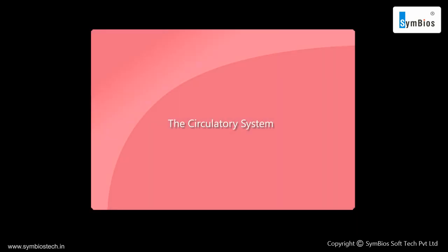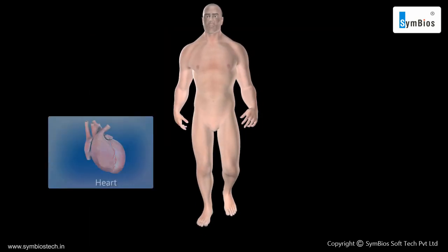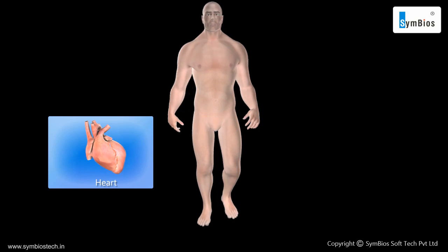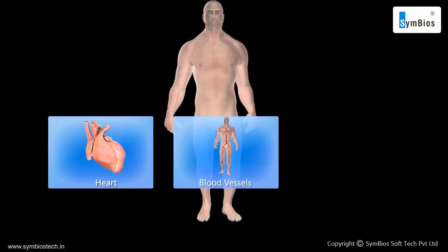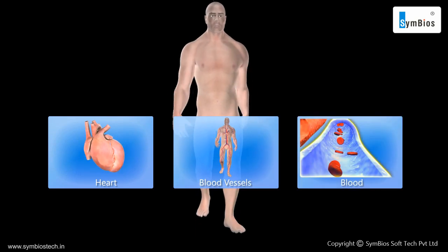The circulatory system consists of the heart, a network of blood vessels, and blood.